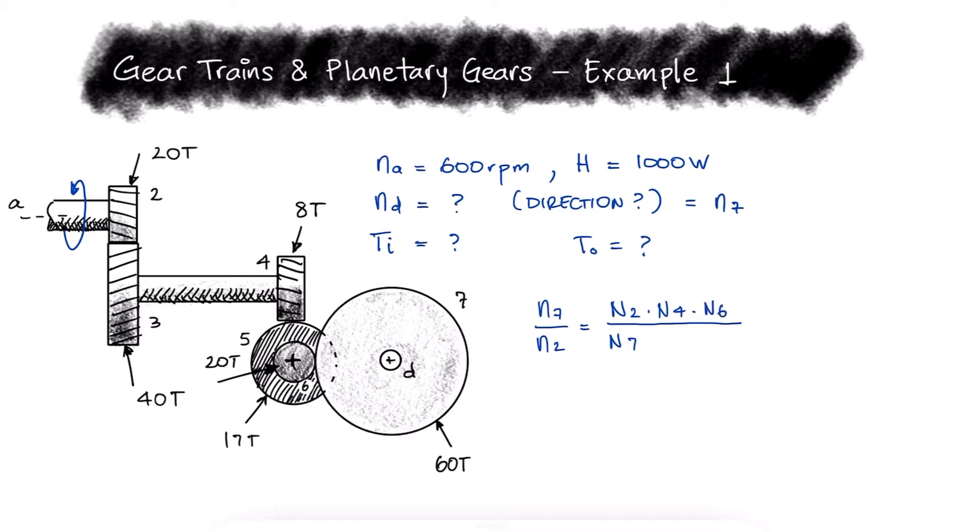The denominator will have the number of teeth of the gears that are being driven, just like gear 7. 3 is being driven by 2, 5 is being driven by 4, and 7 is being driven by 6. This fraction is what we refer to as the train value E.